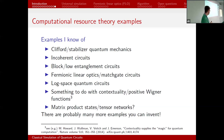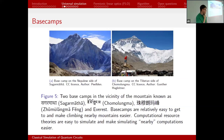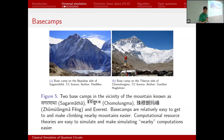Why should you care about computational resource theories? The answer is that they form base camps in the landscape of quantum computation. Not only is a computational resource theory itself easy to simulate, but it makes nearby stuff easy to simulate too. Just as the existence of Everest base camp makes it relatively easy to get closer to Everest, the existence of a computational resource theory gives you simulation algorithms for stuff that's not in the resource theory itself, but close by.